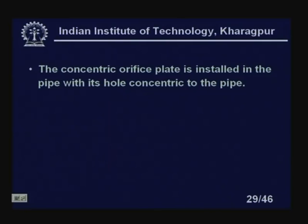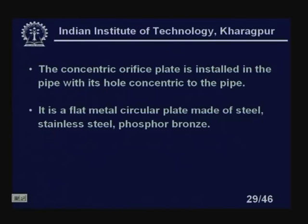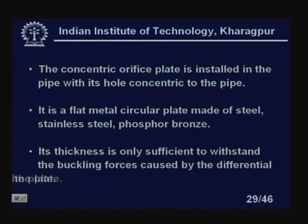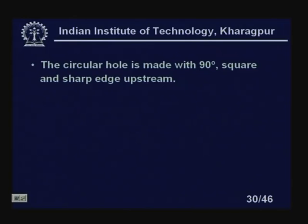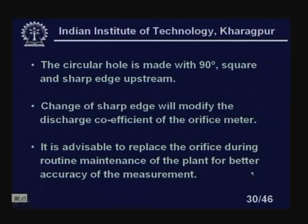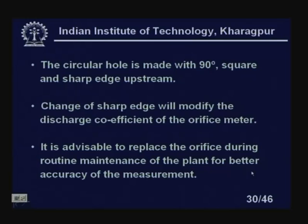The concentric orifice plate is installed with its hole concentric to the pipe. It is a flat metal circular plate made of steel, stainless steel, or phosphor bronze. Its thickness is only sufficient to withstand the buckling forces caused by the differential pressure across the plate. A circular hole is made with a 90-degree square and sharp upstream edge. Changes to the sharp edge will modify the discharge coefficient, so the orifice should be replaced during routine maintenance.